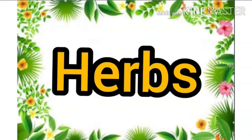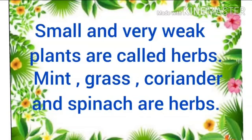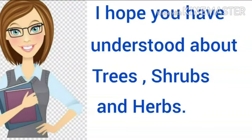Now the next is herbs. Small and very weak plants are called herbs. Mint, grass, coriander, and spinach are herbs. Herbs are very weak plants. We can break their stem easily with our hands. You can see many herbs at your home, like mint and coriander, and you can also see grass in the park. I hope you all have understood about trees, shrubs, and herbs.